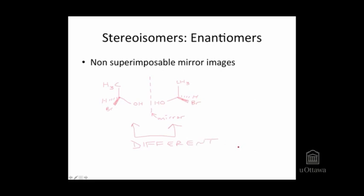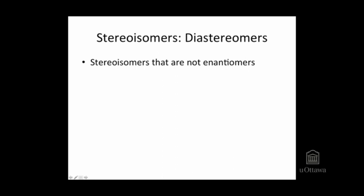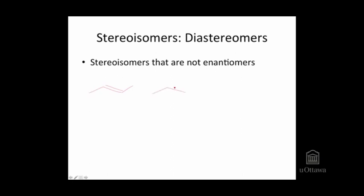The other type of stereoisomer is a diastereomer. These are the categories of stereoisomers that are not enantiomers — basically everything that doesn't fit in the category of enantiomers. One type of example would be an alkene in which one methyl group is trans to the other methyl group. On the left, in this case, the two methyl groups are on the same side of the double bond. So these are diastereomers.